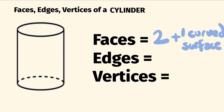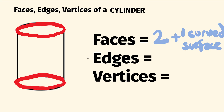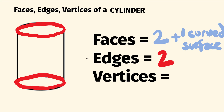So, now let's have a look at the number of edges. These are where the shape's faces meet, and we're going to include where the shape's faces meet a curved surface. There's one edge at the top here, which is this circle, and there's one on the bottom, which is this circle. So there are only two edges in a cylinder.